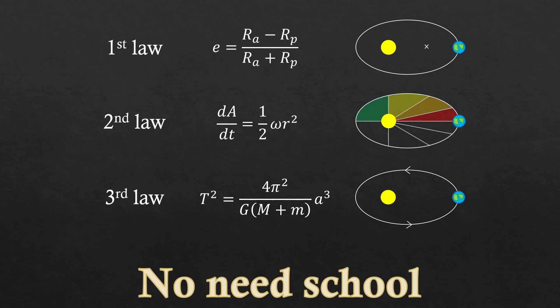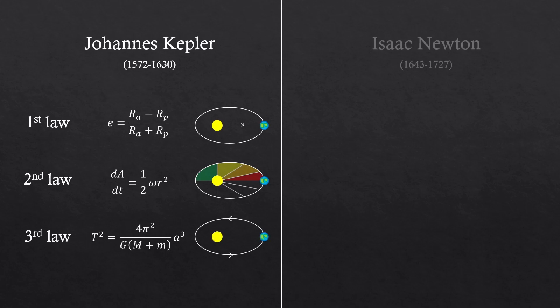I'll explain Kepler's three laws at a high school level. We have Johannes Kepler, who discovered three natural laws, and we have Isaac Newton, who also discovered three other natural laws.